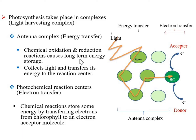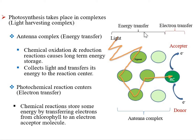The pigments — carotenoids, chlorophyll A, and chlorophyll B — collect energy and transfer it to the reaction center. At the reaction center, chemical oxidation and reduction reactions cause long-term energy storage. Electrons are transferred from chlorophyll to an electron acceptor molecule. This electron transfer may take place through a cyclic process or through a non-cyclic process — these are the light-dependent reactions.